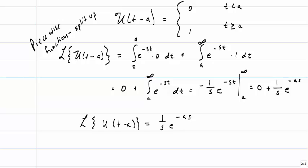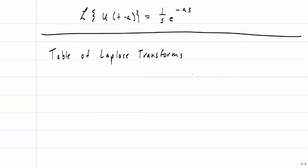There should never be any t's when we're done with a Laplace Transform — it goes completely from the time domain into the S domain. If you still have a t left over, you've done something incorrectly. On the exam, I'm going to have you do one Laplace Transform by definition, and it's probably going to be one that involves a piecewise function. But in general, when we're trying to find Laplace Transforms, we're going to use a table of Laplace Transforms, because it would be pretty tedious to use the definition each time.